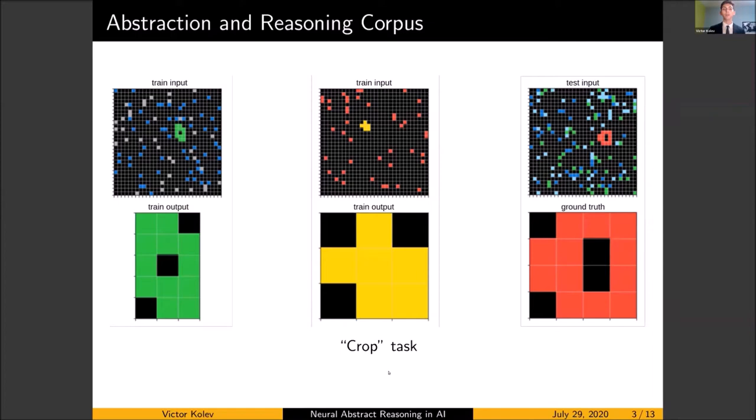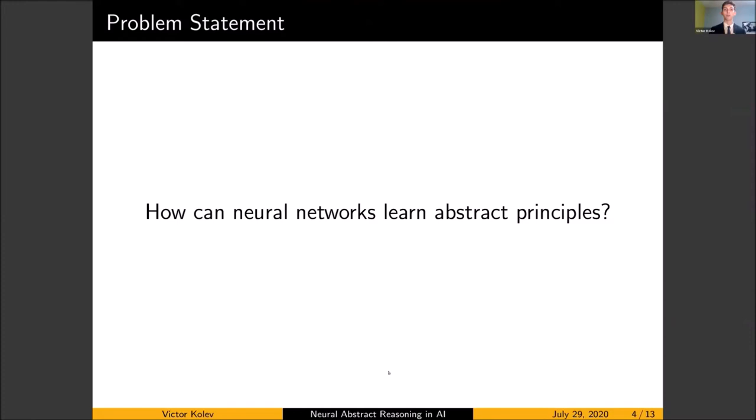An example of a task from the abstraction and reasoning corpus is the crop task as you can see on the slide. The neural network is presented with a grid on which some squares are colored and they form patterns. One pattern in this grid is distinct from the others, and the job of the neural network is to find it and then crop it out. Humans can derive this logic from very few samples, one or two maximum. In line with that, the abstraction reasoning corpus only provides a maximum of five examples from which the agent must learn and then apply the logical rule to a test.